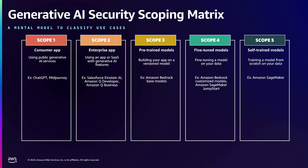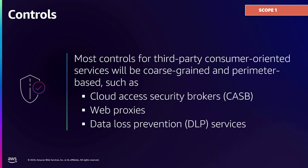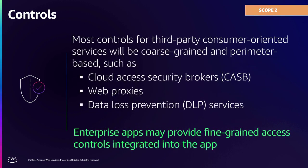I'll walk through the first two scopes and then Maitreya will bring us home with scopes three through five. For a consumer application in scope one, you're going to be using the same core screen controls that you would have used previously — there's not a lot of interaction. In scope two, you look at standard things like cloud access security brokers or CASB, web proxies, and data loss or data mitigation strategies.